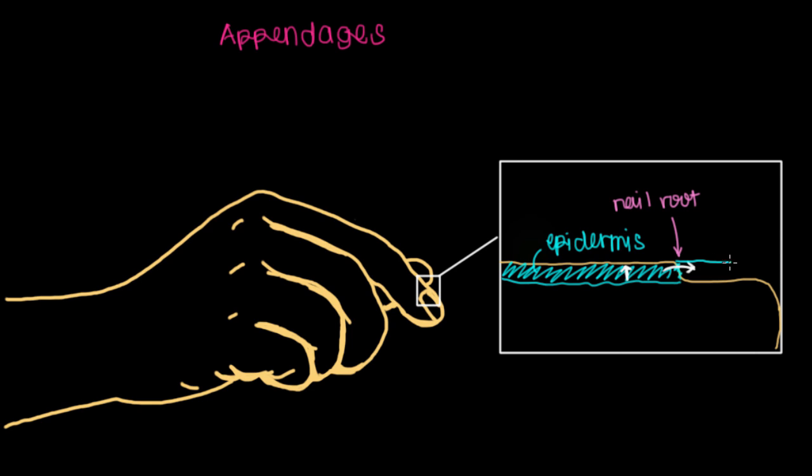What that means is that your nail is essentially a part of the epidermis. So I'll draw your nail right there in blue because it's made up of thick keratin.